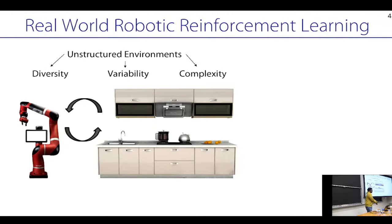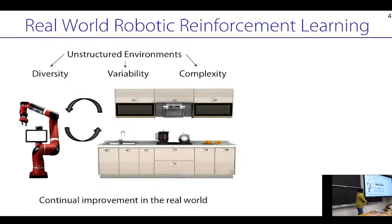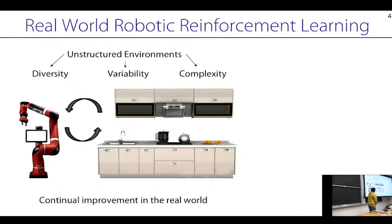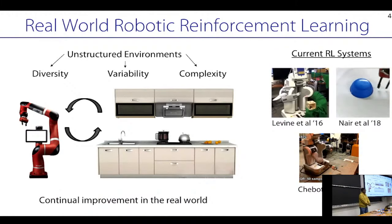We should ask why we should use RL and in what types of environments. In unstructured environments with a big amount of diversity, variability, or complexity — homes, hospitals, shopping malls — we probably want algorithms that can learn with minimal effort. You want to drop your robot into a kitchen, say 'put the kettle on the stove,' and have it keep getting better. In contrast, you probably wouldn't use RL in a factory repeatedly doing the same thing.